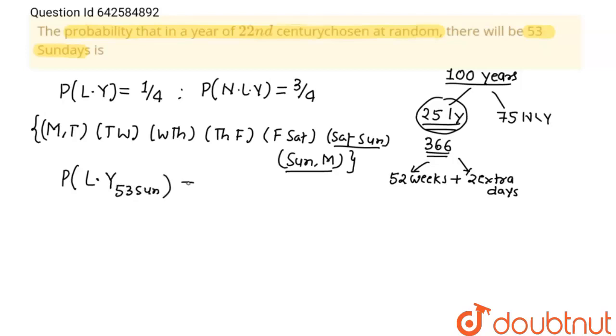So probability of 53 Sundays in leap year will be equals to two favorable outcomes upon total sample space seven. And probability of 53 Sundays in non-leap year will be equals to 1 upon 7.